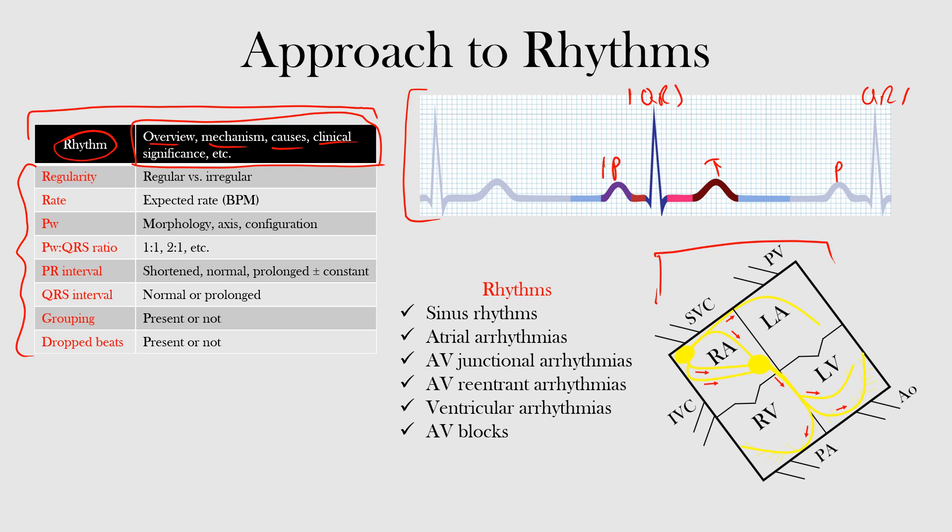We'll look at the PR interval. Remember the PR interval is from the beginning of our p-wave up until the beginning of our QRS complex. This represents most of the AV nodal conduction. In adults the normal PR interval is between 120 and 200 milliseconds. We'll see is it shortened, is it normal, prolonged, is it constant, and how that changes what we decide is the actual rhythm at hand.